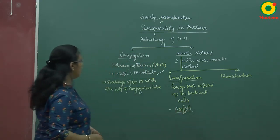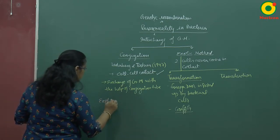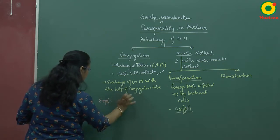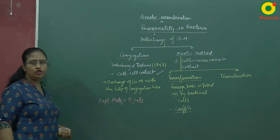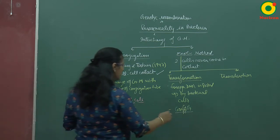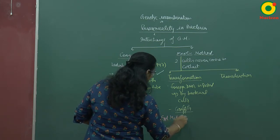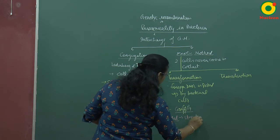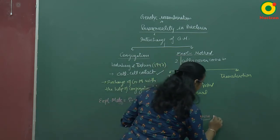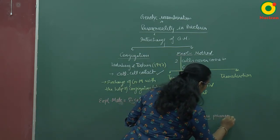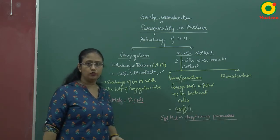Conjugation was studied in E. coli bacteria, whereas transformation was studied in the bacteria Streptococcus pneumoniae, also known as Diplococcus pneumoniae.